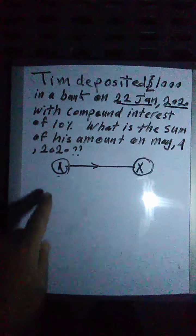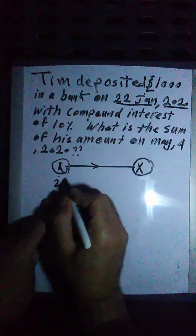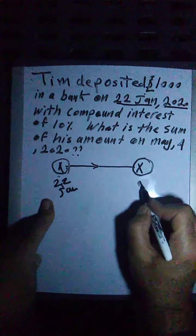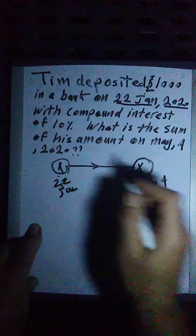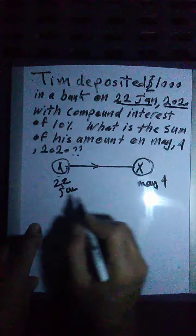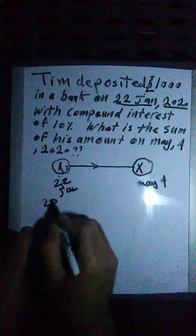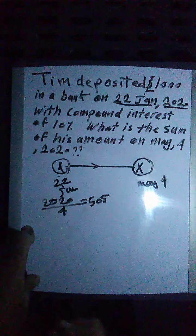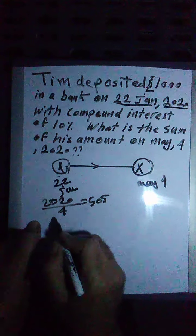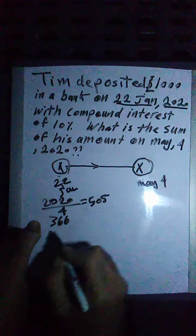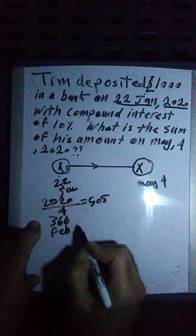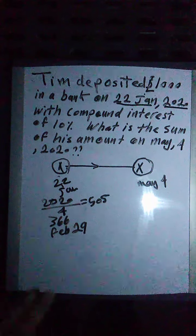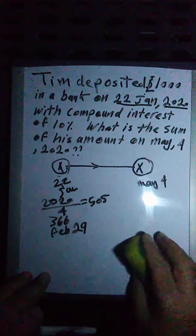Let's now go for the calculation of the period between 22 Jan and the other date May 4. So this year is 2020, which is a great year. When I divide by 4, it will give me 505. No fraction. Then this is 366 days and February is 29 days. So here we go.